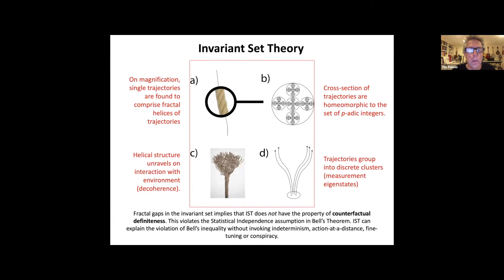By contrast, in Invariant Set Theory we're talking about the geometry of a fractal attractor or a fractal invariant set. The particular picture which has been developed to describe quantum physics is one where a trajectory in state space is no longer a single line but on magnification it's some kind of fractal helix. You could think of it like a piece of rope where you have pieces of rope wrapped around each other, and then the individual pieces of rope are comprised of pieces of rope and so on and so forth.